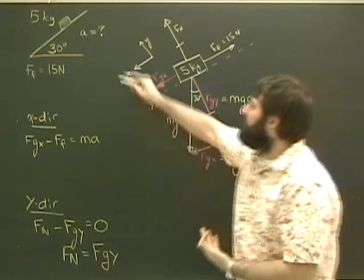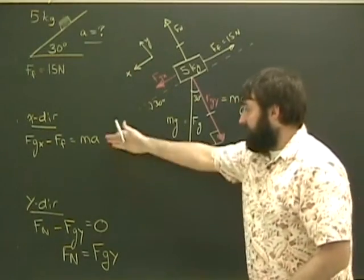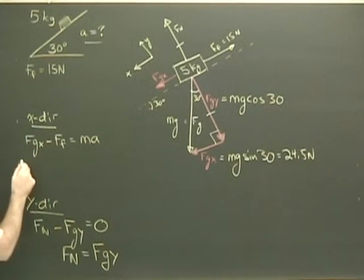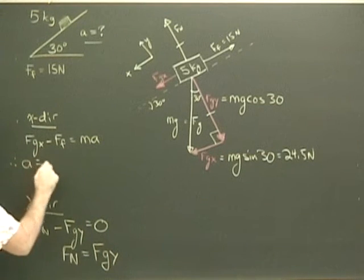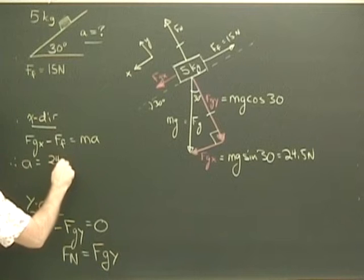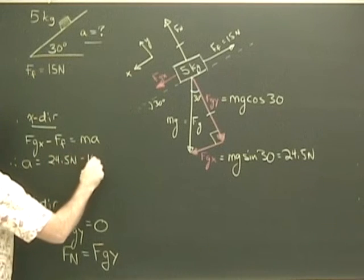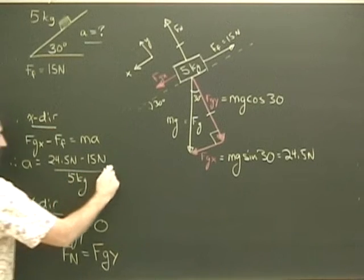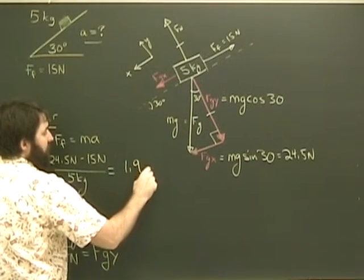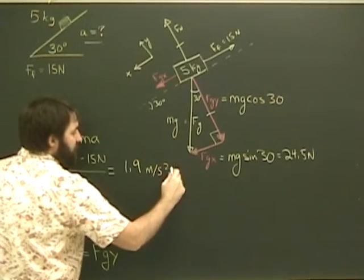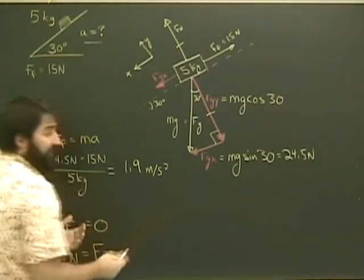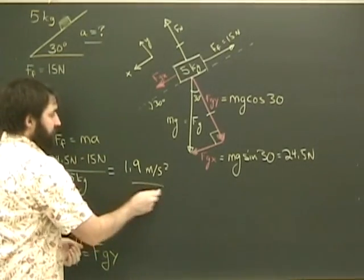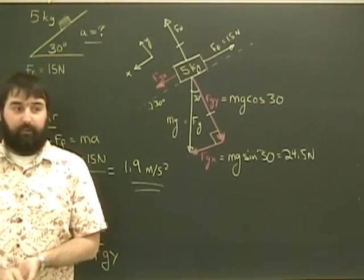But the question, what was the question? It asks us to find the acceleration. Okay, so I look back here in my x-direction. Fgx minus Ff equals Ma. Therefore, the acceleration equals 24.5 newtons minus 15 newtons, all divided by 5 kilograms, which gives us an acceleration of 1.9 meters per second squared. And obviously the direction is down the ramp. And we're done.